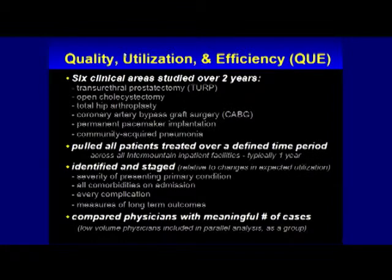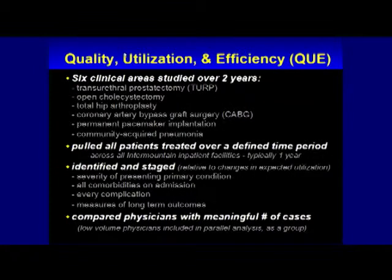I insisted, for example, that we measure every comorbid illness for those patients on admission to the hospital and individually stage each — every complication, stage that; long-term outcomes, stage that; severity of presenting symptoms. We ended up with a group of patients that, so far as we could tell, were statistically identical coming in and going out. We argued that was the only circumstance in which it was really fair to look at the processes of care.